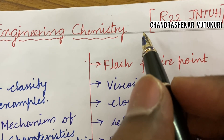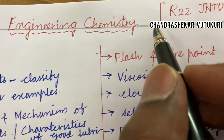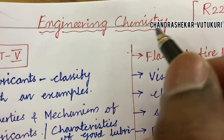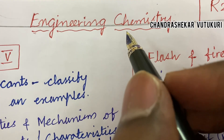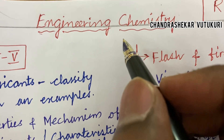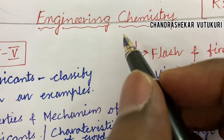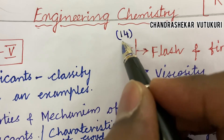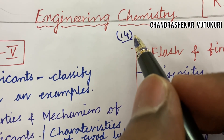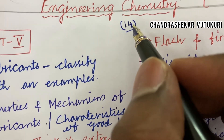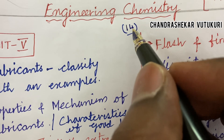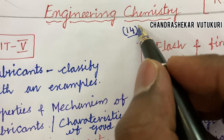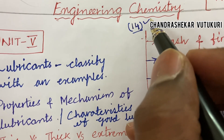As per the R22 regulation, the question paper pattern is different, and the marking for the external examination is 60. You are eligible to take the external exam if and only if you score 14 marks in the average of Mid 1 and Mid 2. A video is posted in my channel — please go through it and watch for the marking pattern of R22 regulation.